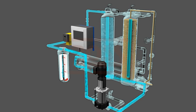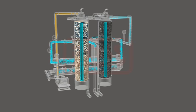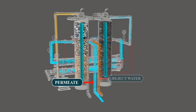Water passes through the membranes while most dissolved solids do not pass through. This pure water, achieved because of reverse osmosis, is also called permeate or product water, which is used for various processes or can be stored in a storage tank for later use. Part of the reject water is either recycled or can alternatively be reused.